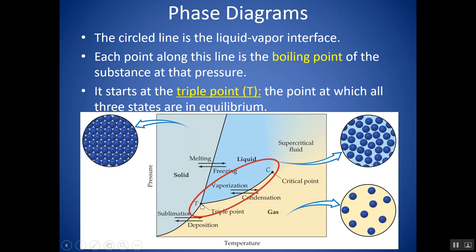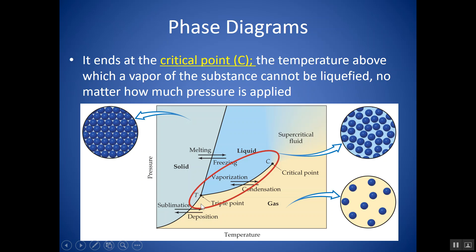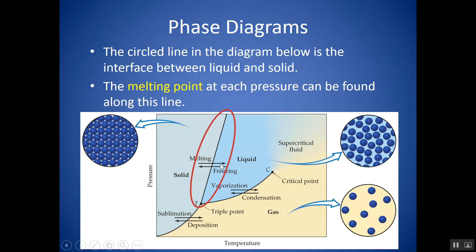This boiling point line starts at the triple point, where all three phases — solid, liquid, and gas — are present in equilibrium, which is why it's called the triple point. It ends at the critical point, which is the temperature above which a vapor can no longer be liquified no matter how much pressure is applied. Above that point, you can't go directly between gas and liquid.